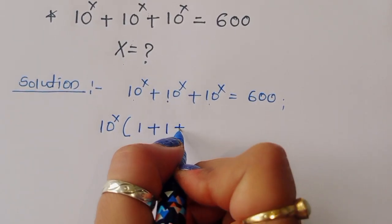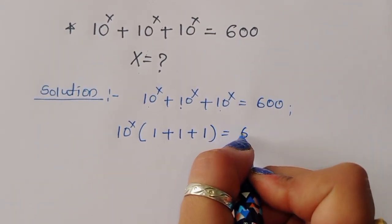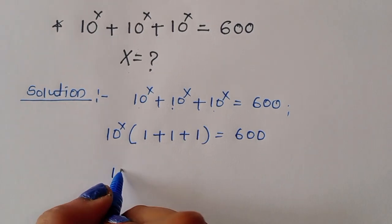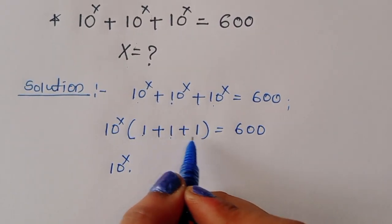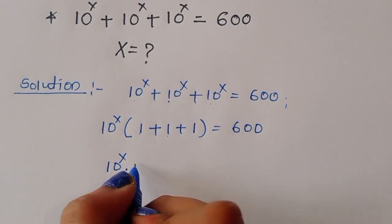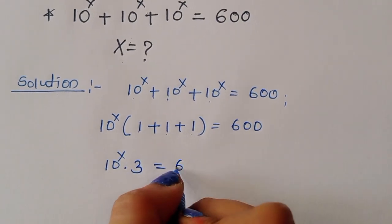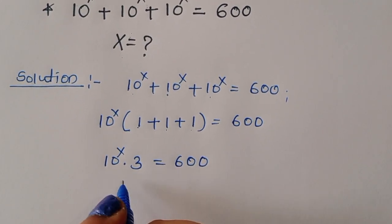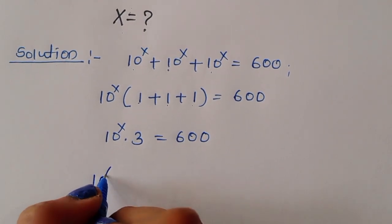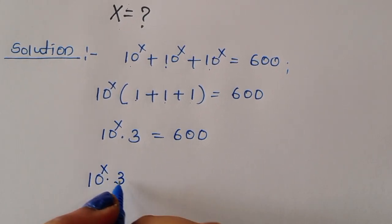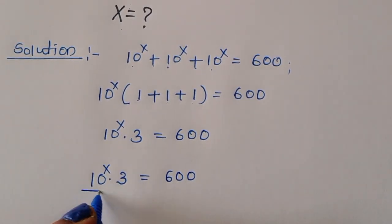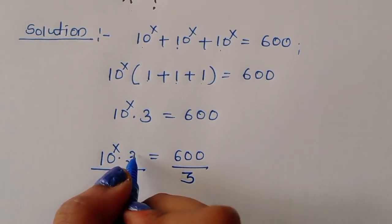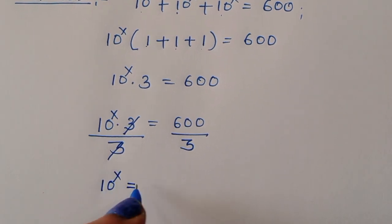Taking 10 power x common, we get 1 plus 1 plus 1, which equals 3. So 10 power x times 3 equals 600. Now we divide both sides by 3 — the 3 cancels — so 10 power x is equal to 200.